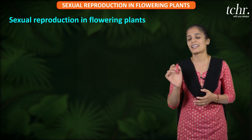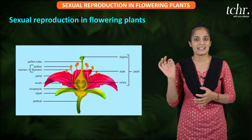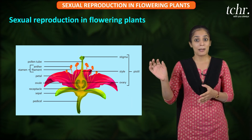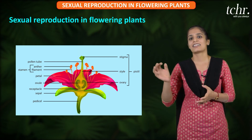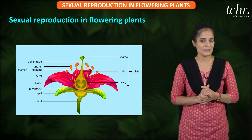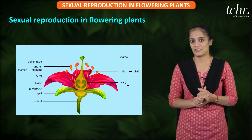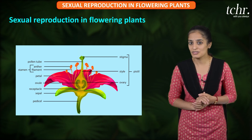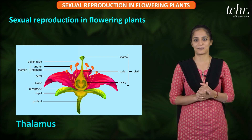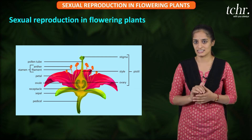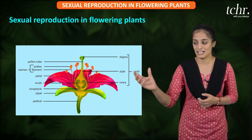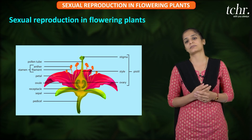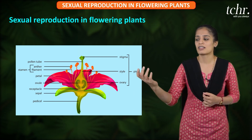A flower gets attached to the parent body with the help of a stalk-like structure called the pedicel. The pedicel can be attached to the stem part or branches. The part to which the pedicel attaches is the receptacle or thalamus, which is the base supporting all the other floral whorls.